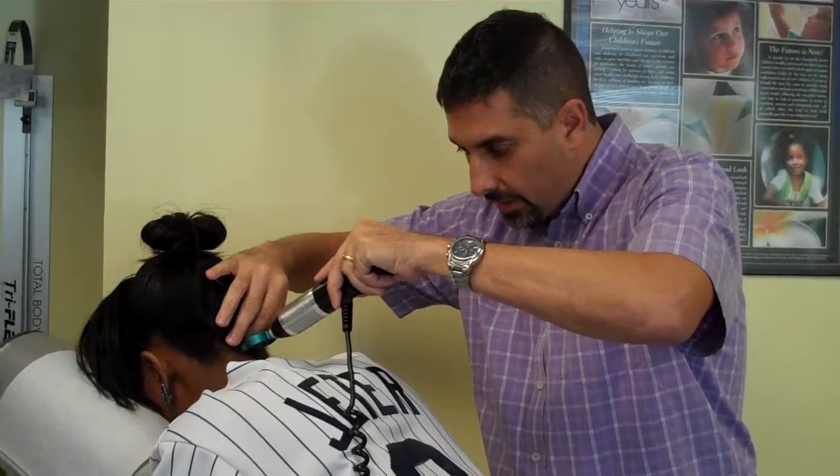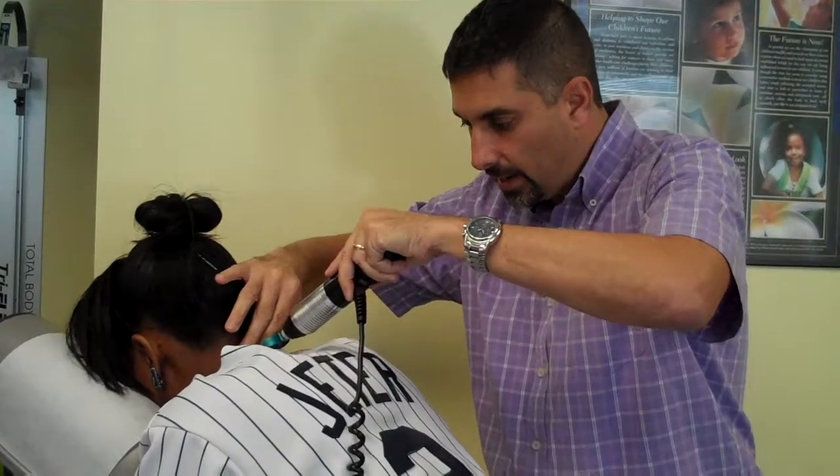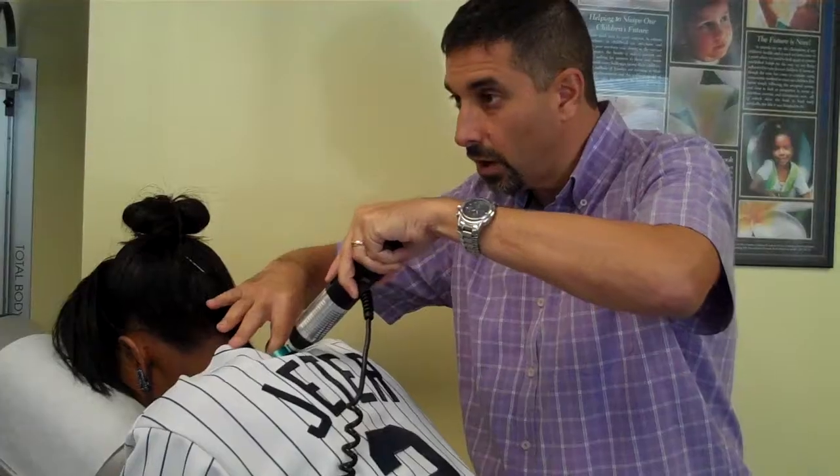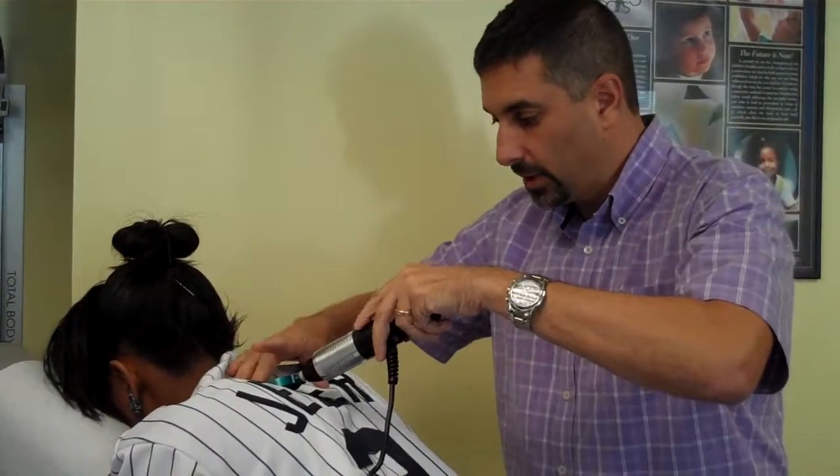you're going to start at your C1 vertebrae, 90 degrees to the spine, keep your fingers off the tip of the instrument, and drop your shoulders.